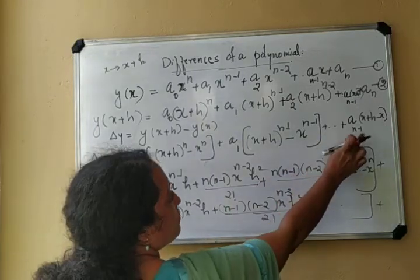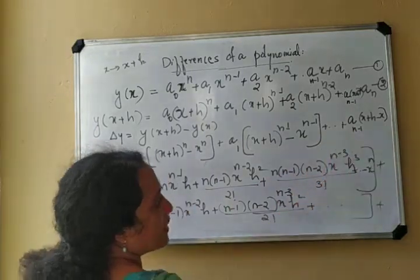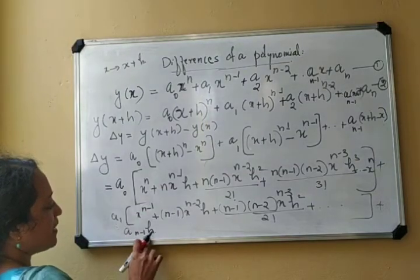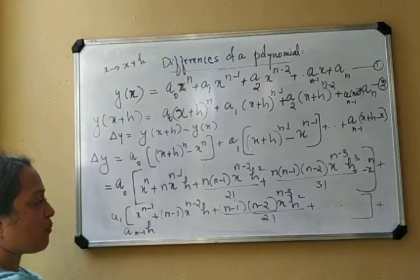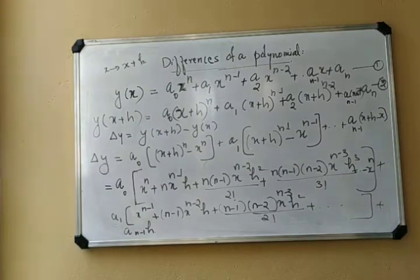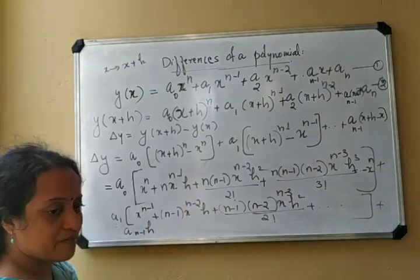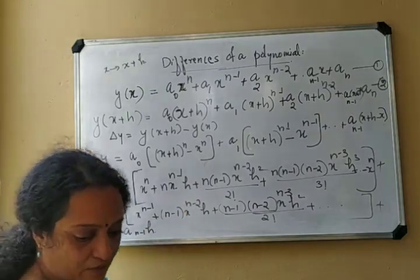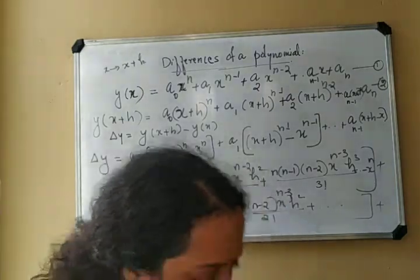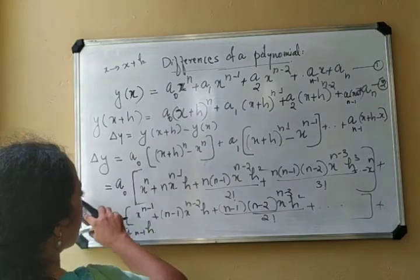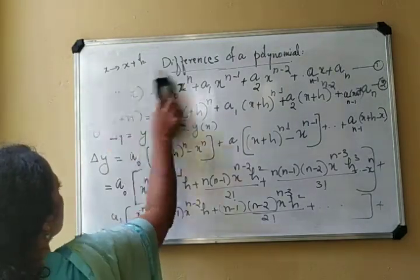The last term is a(n-1) into (x+h - x), so it becomes a(n-1)·h. Now we can group the coefficients of similar powers of x.